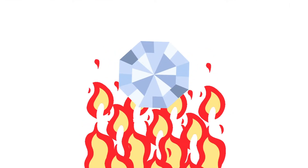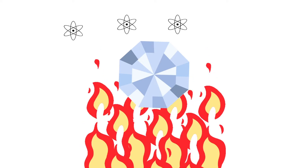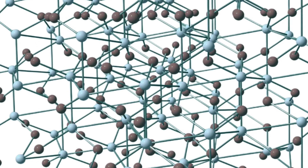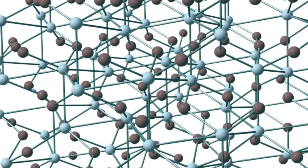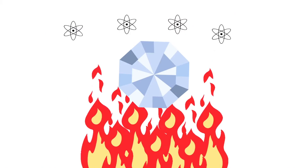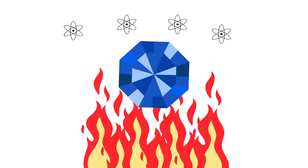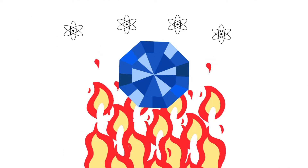The gems are subjected to extremely high temperatures in the presence of other elements. This heat expands the gem's crystal lattice, allowing elements from the outside to enter the structure. This changes the way the gem absorbs light, altering its colour.